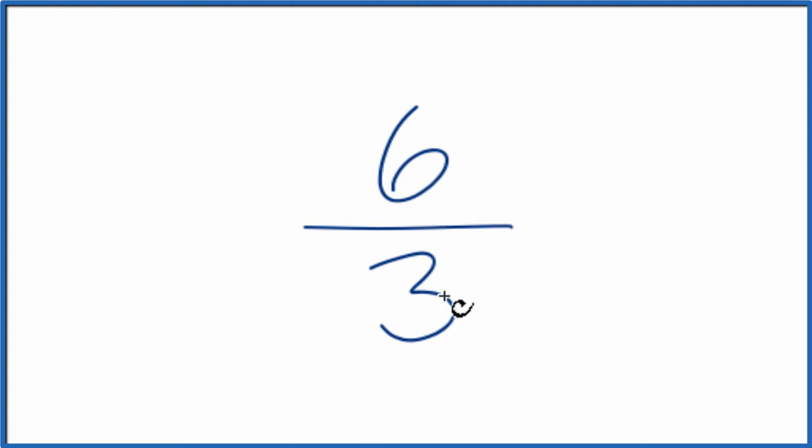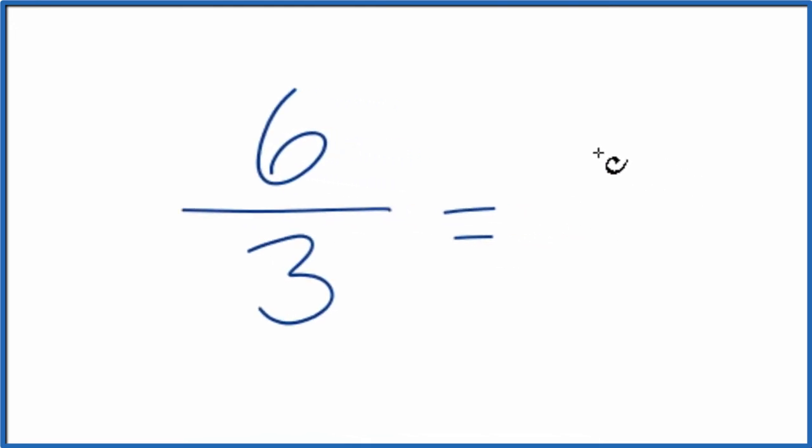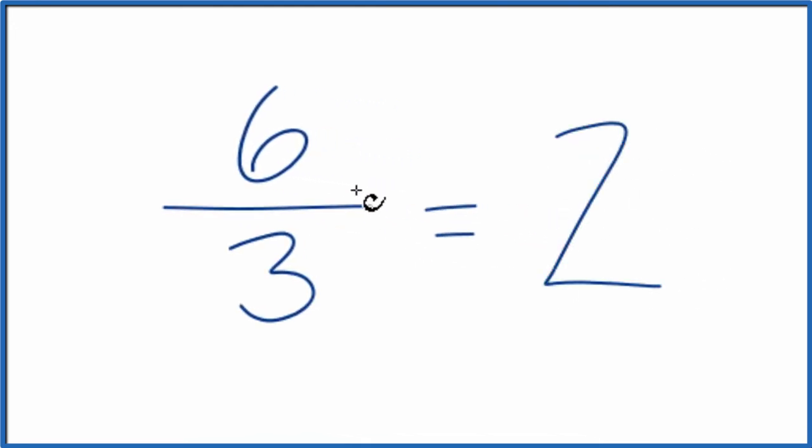I know that 3 goes into 6 two times. So if I divide 3 into 6, that'll just give me 2. So to simplify or reduce 6 thirds down to a whole number, we could just call it 2.